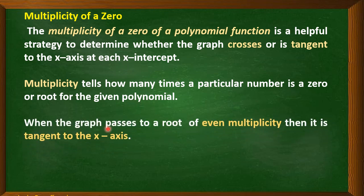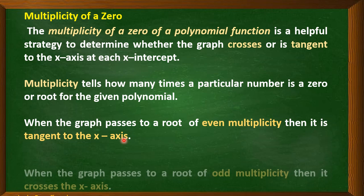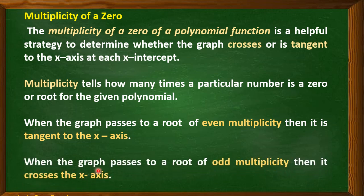When the graph passes through a root of even multiplicity — take note, even multiplicity — then it is tangent to the x-axis. When the graph passes through a root of odd multiplicity, then it crosses the x-axis. So there are two important points to remember: even multiplicity means tangent to the x-axis, and odd multiplicity means crosses the x-axis.